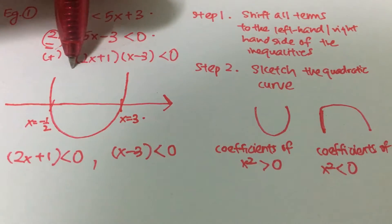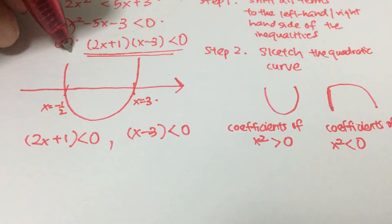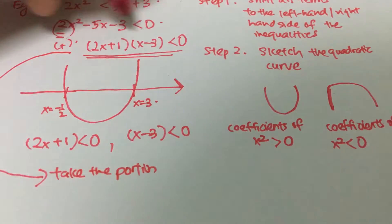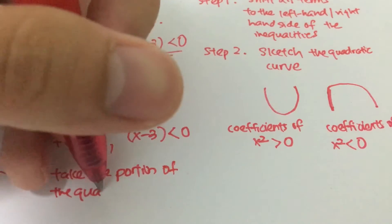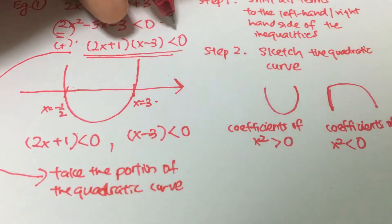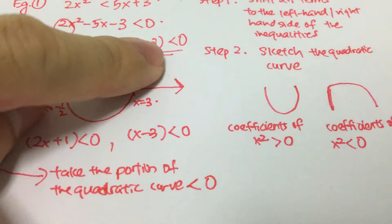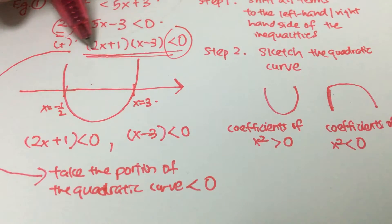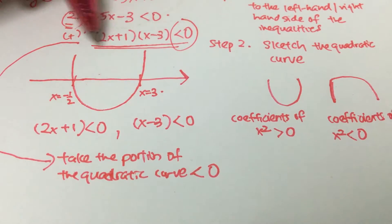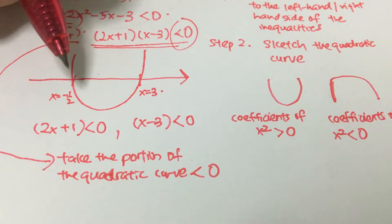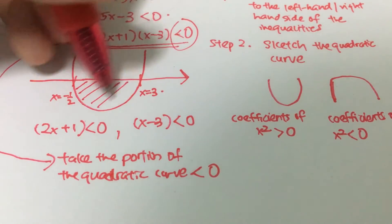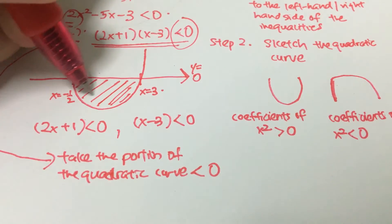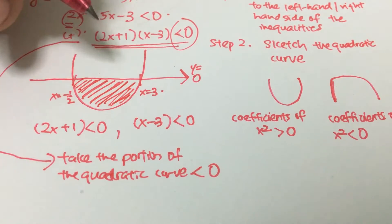Let's take a look at what this inequality actually means. This inequality means we want to take the portion of the quadratic curve that is below zero — below the x-axis. So which portion of the quadratic curve is below zero? It's the portion between the two roots, where the curve dips below the x-axis, meaning y is less than zero.